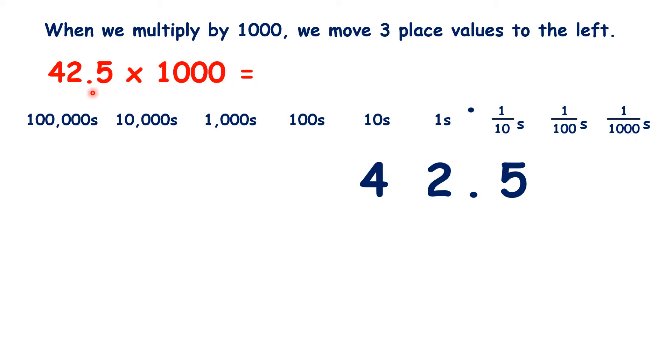If we have 42.5 times a thousand, we move the digits three places to the left, and then we need to write zeros in our empty tens and units columns to get our answer 42,500.